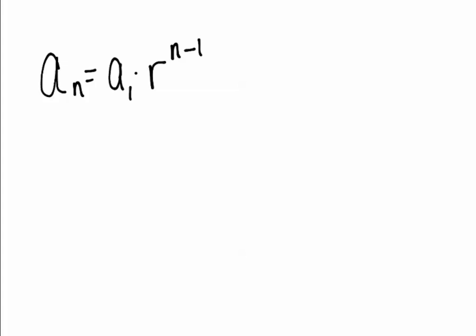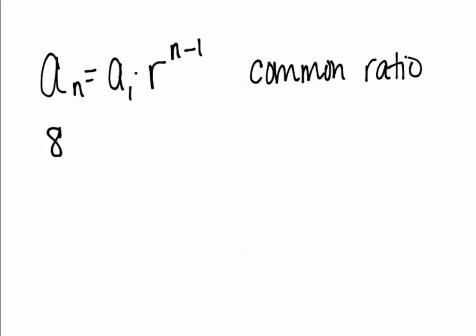Today we're going to talk about geometric sequences. The difference between an arithmetic sequence and a geometric sequence is that a geometric sequence has a common ratio. A common ratio means instead of adding or subtracting the same number each time, we're now multiplying by the same number — and we're only multiplying, never dividing.